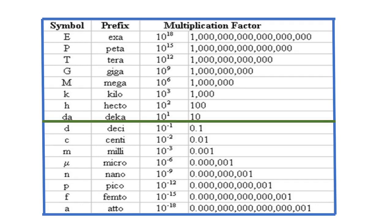D, deci, 10 to the negative 1st power; C, centi, 10 to the negative 2nd power; M, milli, 10 to the negative 3rd power; micro, 10 to the negative 6th power; nano, 10 to the negative 9th power; pico, 10 to the negative 12th power; femto, 10 to the negative 15th power; atto, 10 to the negative 18th power.